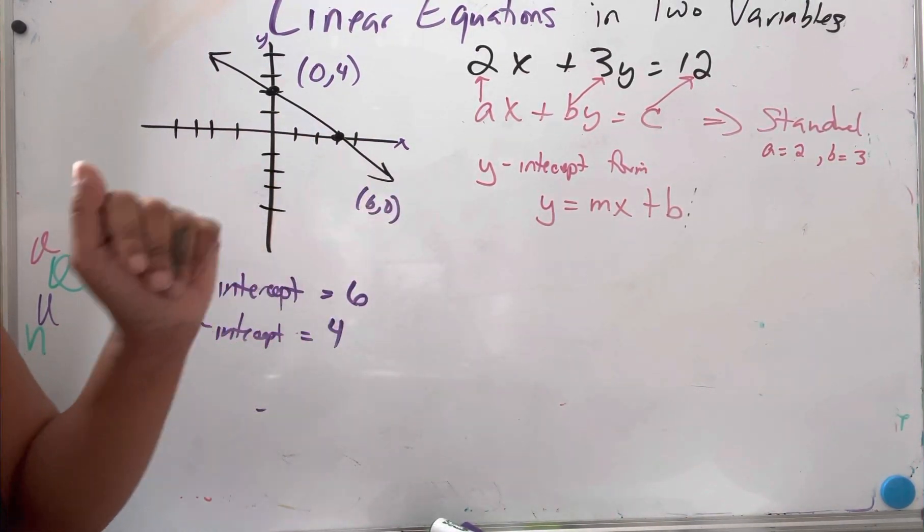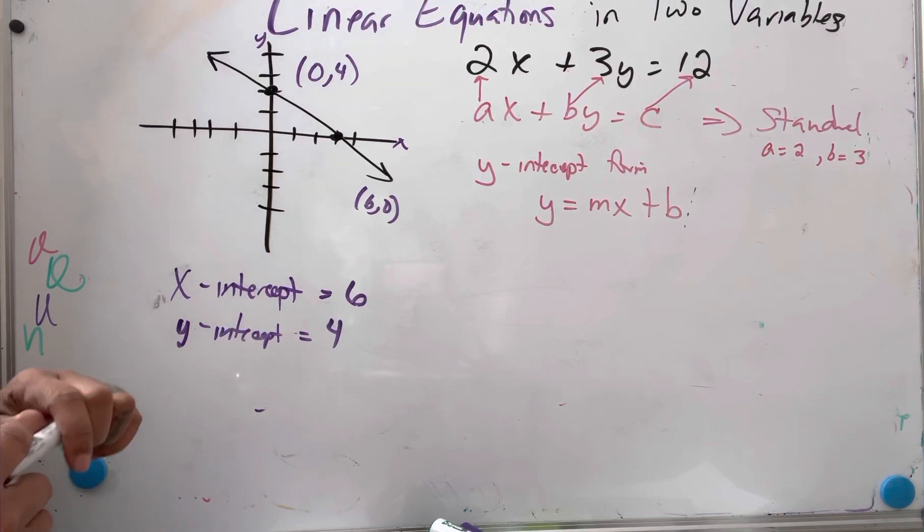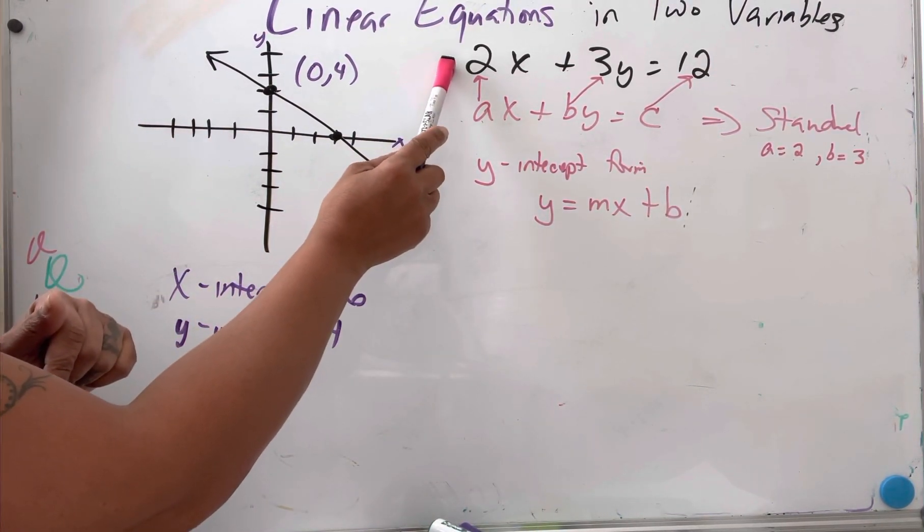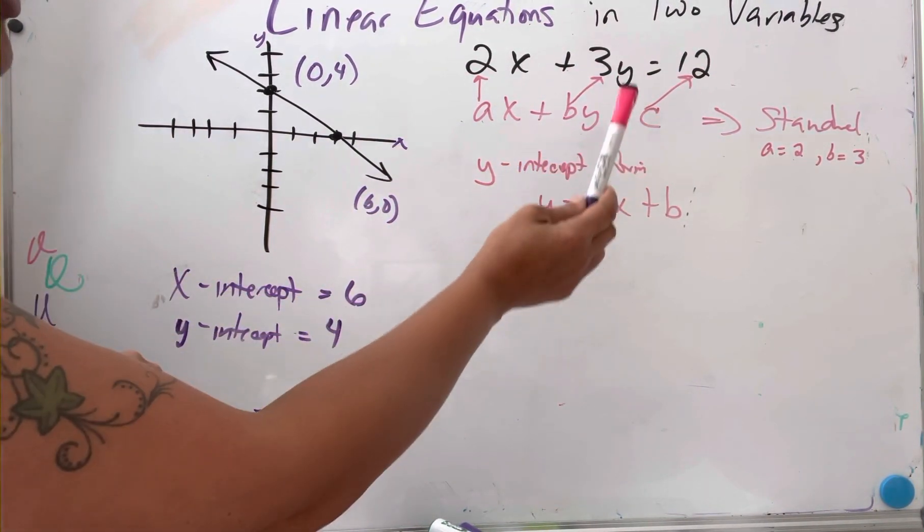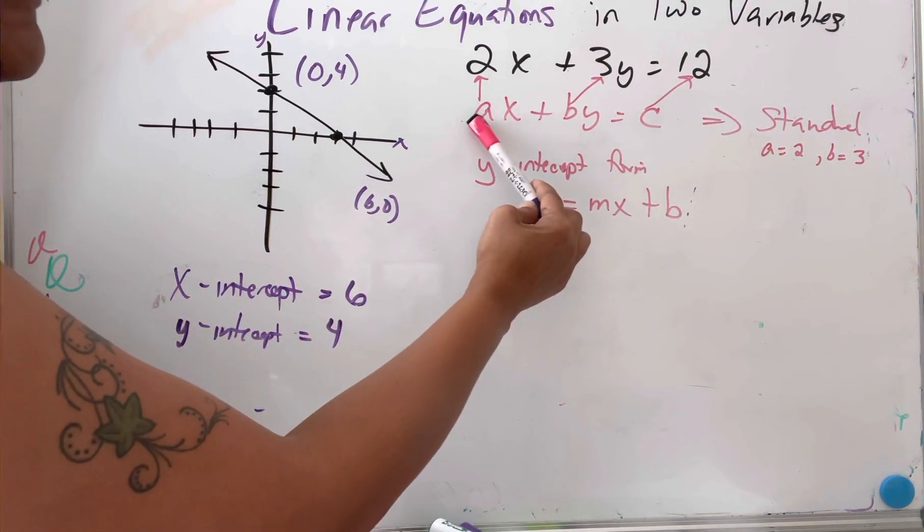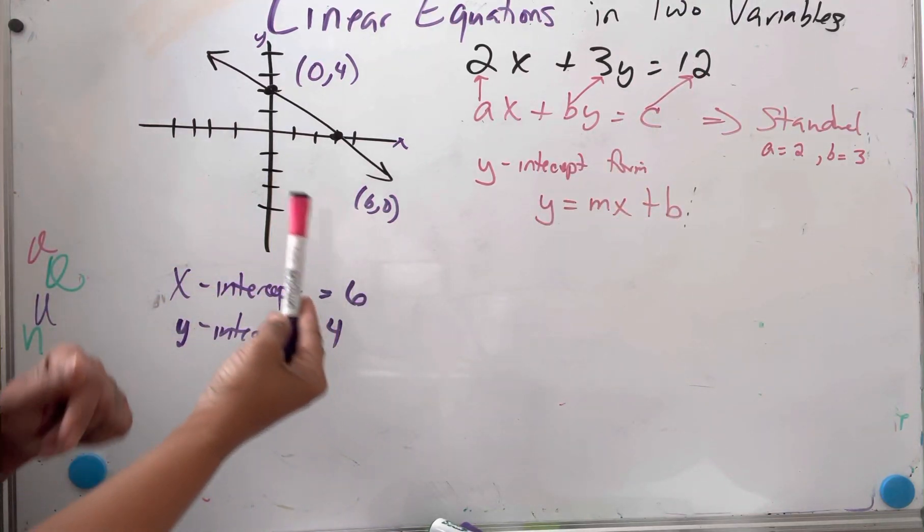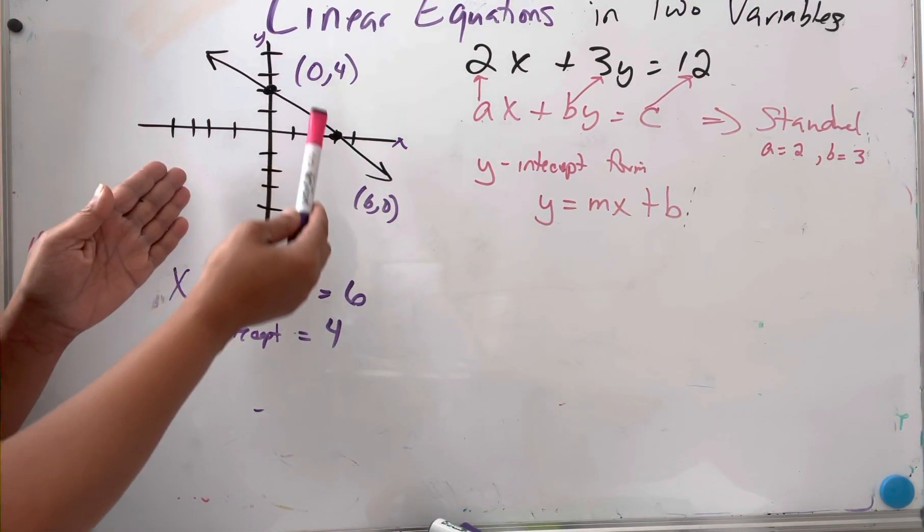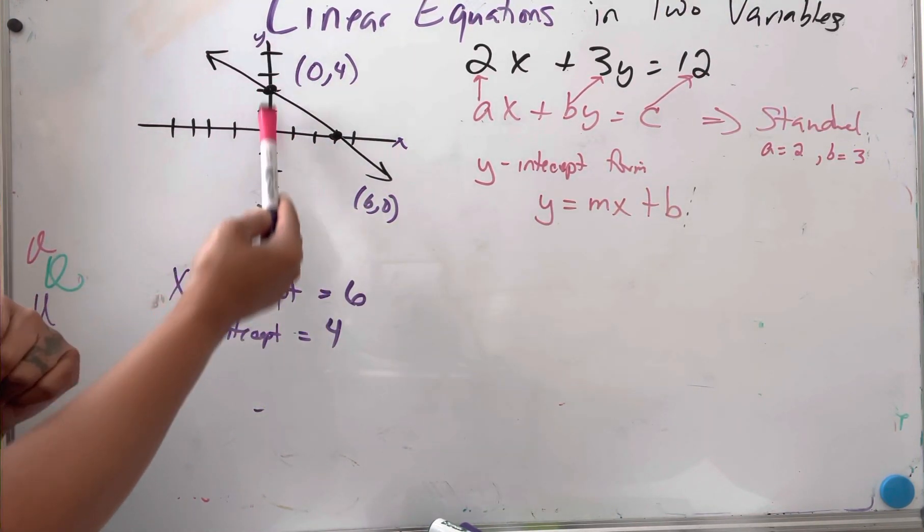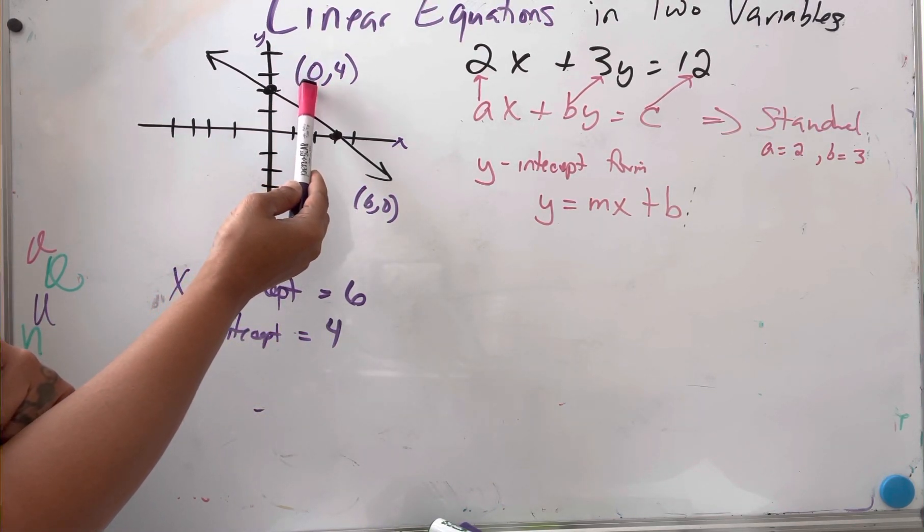It's time to talk about the y-intercept form, but first let's revisit this equation here: 2x plus 3y equals 12. It's in standard form of Ax plus By equals C. A is 2, B is 3, C is 12, and I'll go ahead and recopy down this graph here and make sure you have your ordered pair.